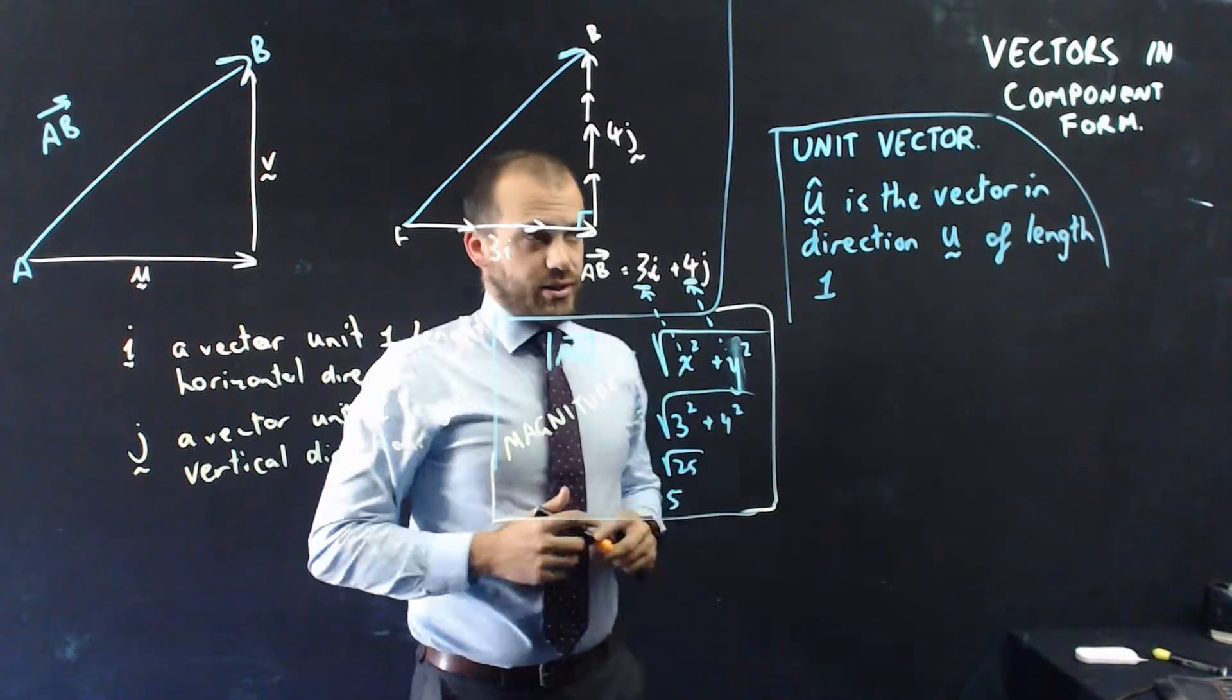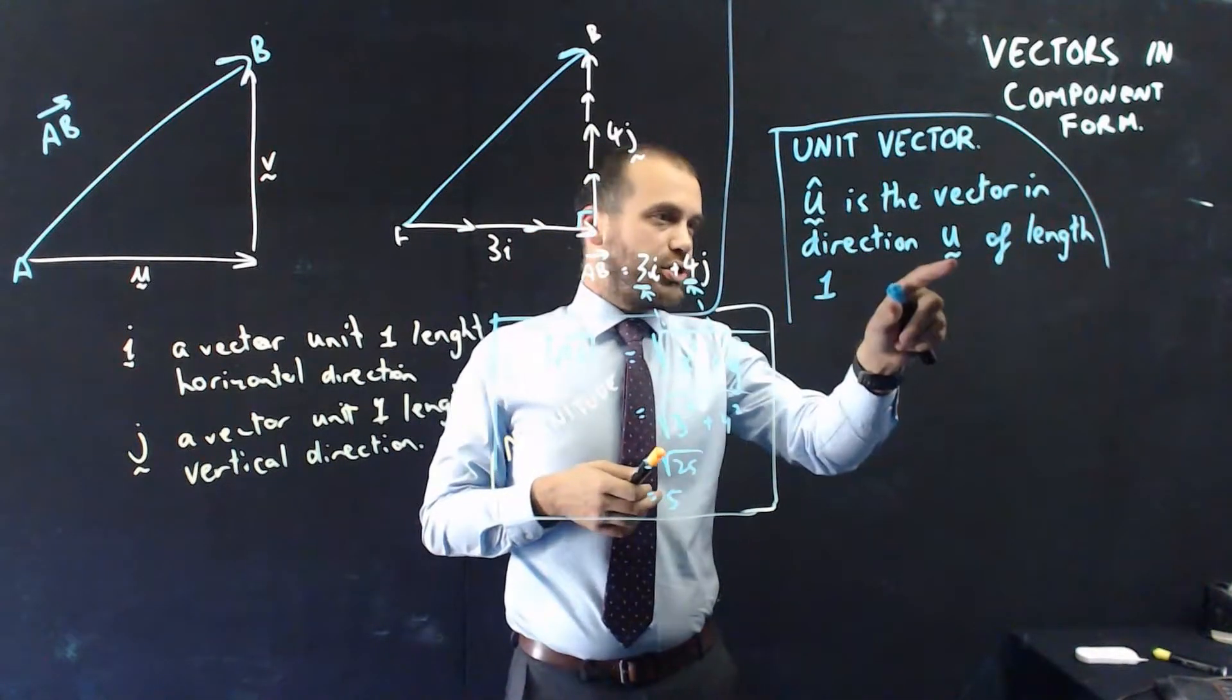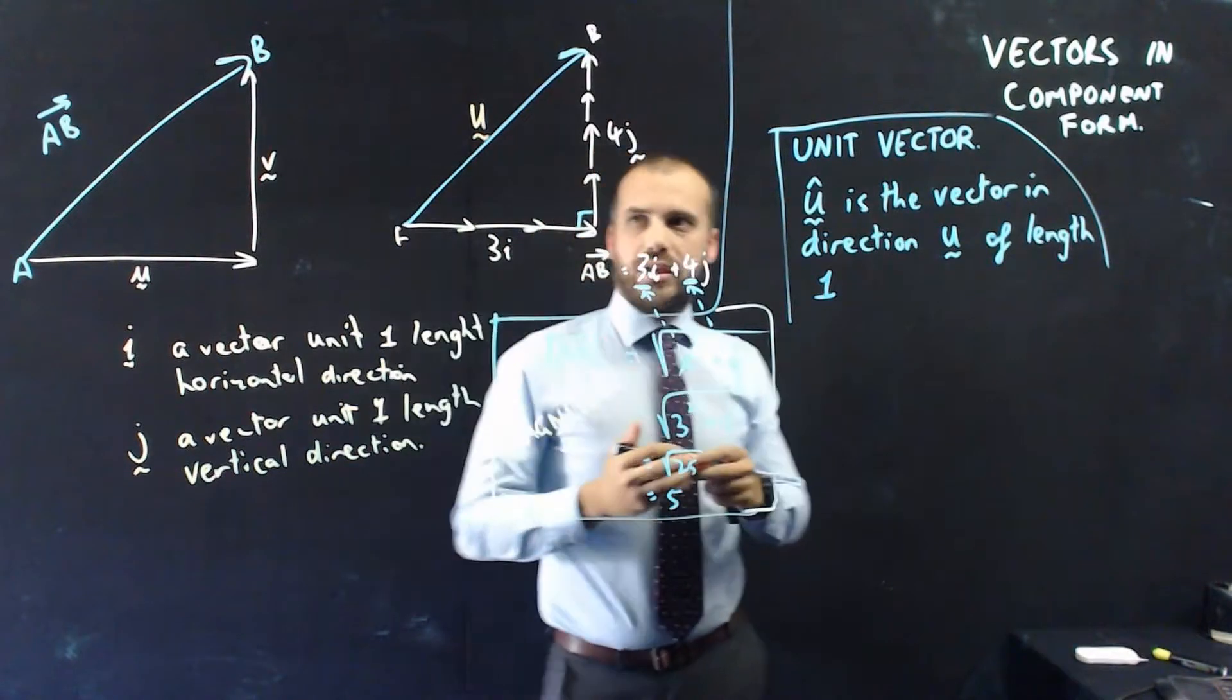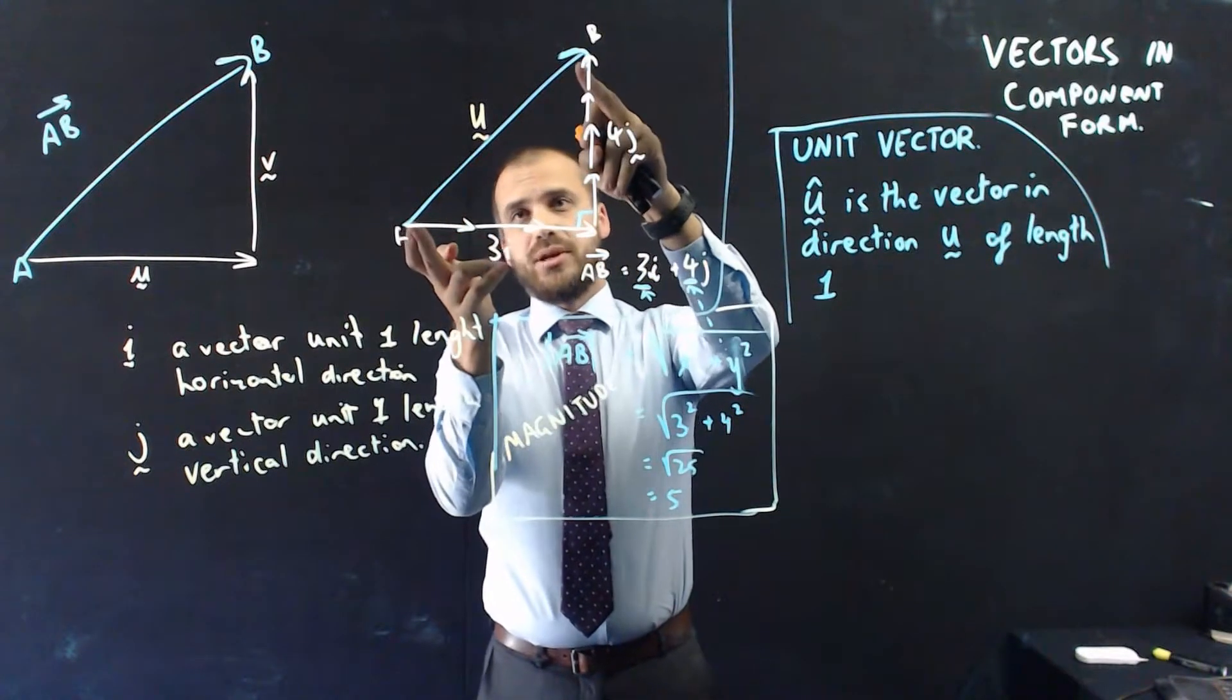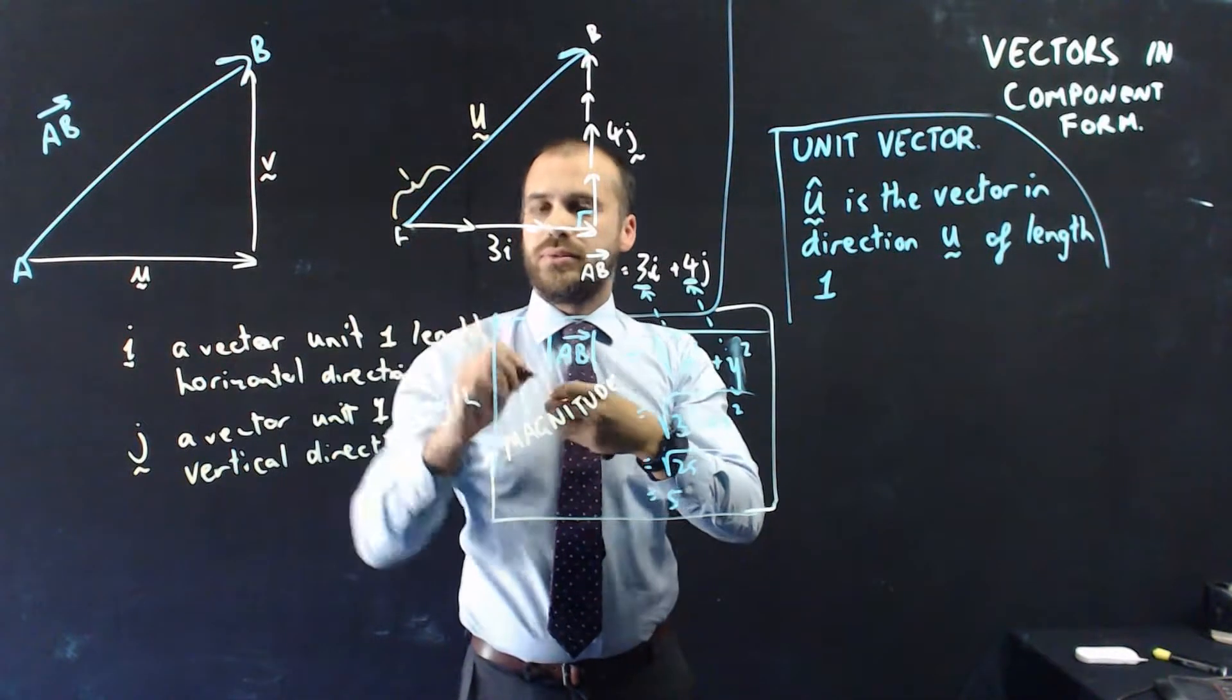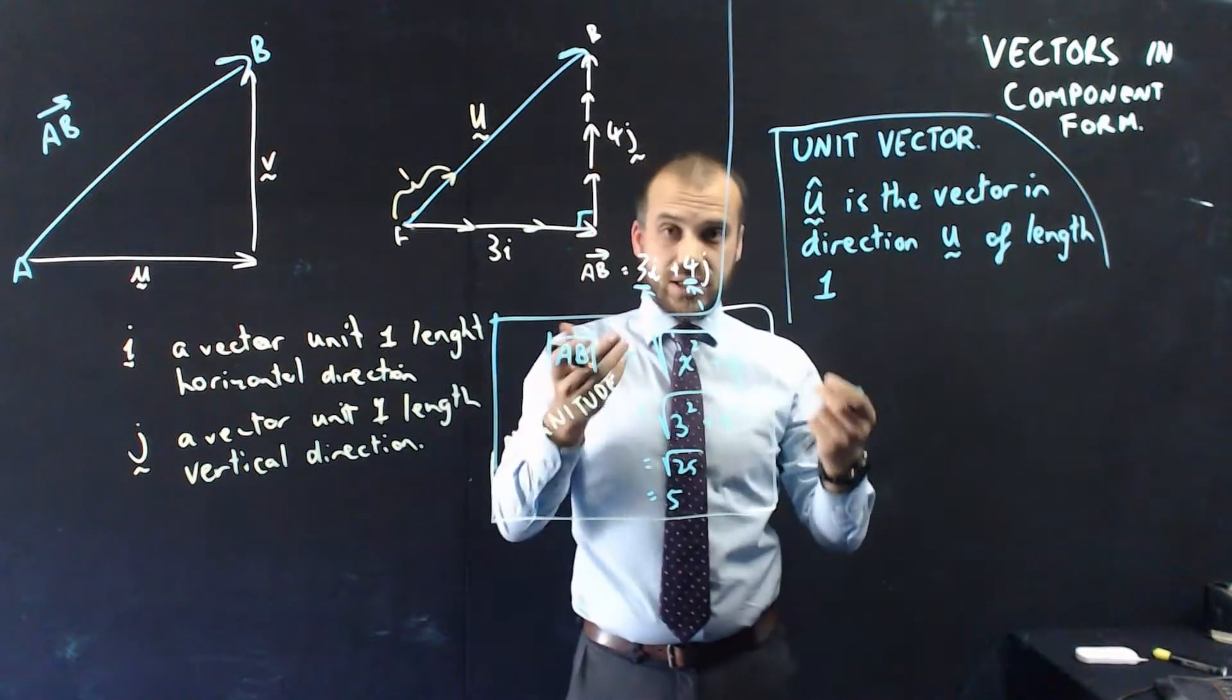And that brings us to the unit vector. All right. So the unit vector, unit vector, so we've got our vector u, is the vector in direction u of length 1. So if we keep looking at this vector here, let's call that vector u for now. If we want to find its unit vector, we're saying, all right, I want to take the vector. I want it to be the same, but I just want to scale it down so the length of it is equal to 1. Now, that new vector that I've created, that is just that long, but in that direction, is called the unit vector of that particular vector.